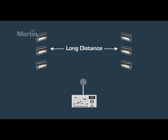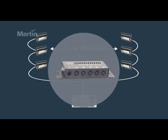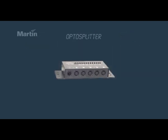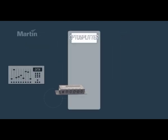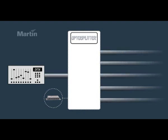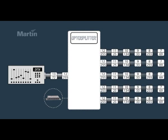Imagine if we could divide the data into two identical streams. Well, we can, with the help of an additional device called an optosplitter, or a DMX splitter. Some even refer to it as the RS-485 splitter. What the optosplitter is able to do is split or divide the stream of DMX data into five identical streams.